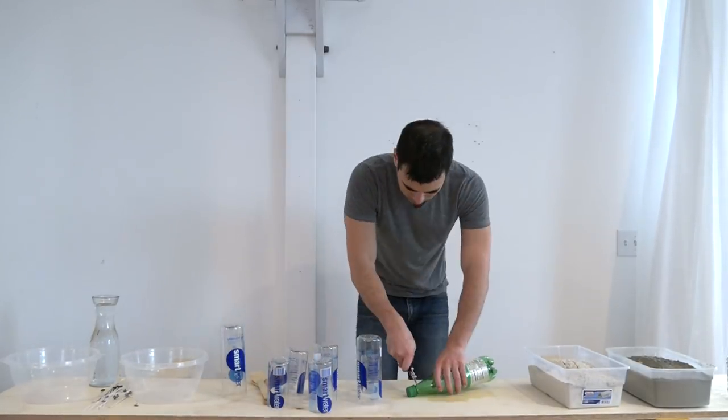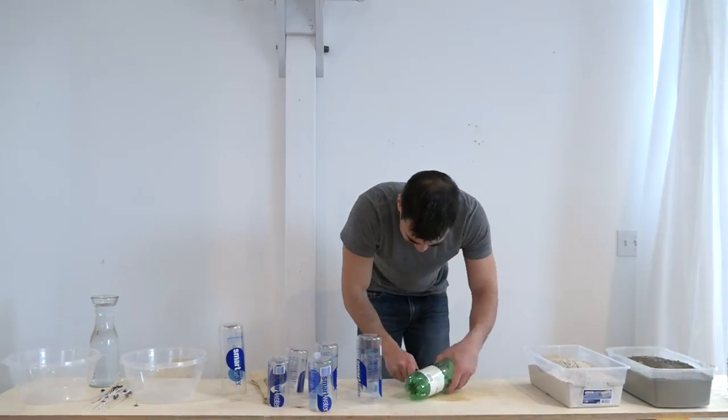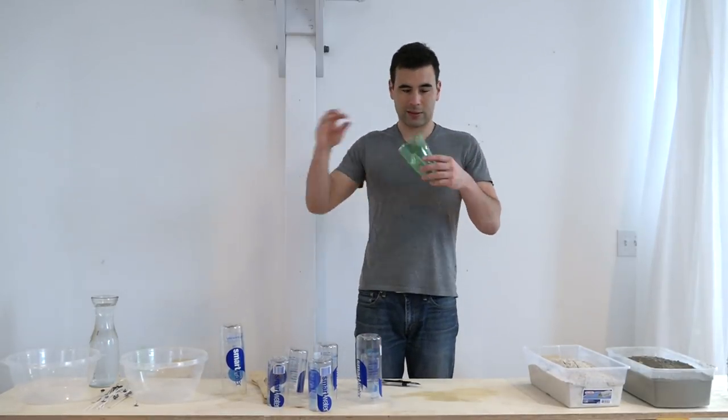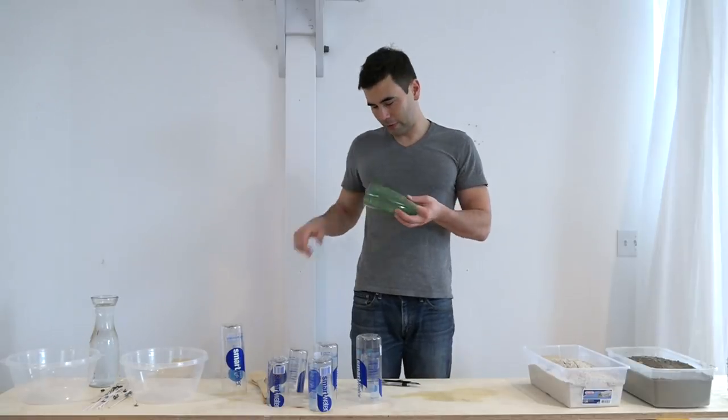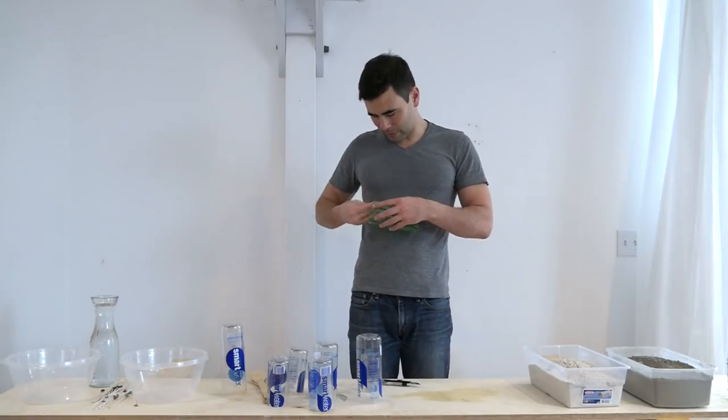Now one of the tricks for making these things is to get the concrete cleanly to the bottom of the water bottle. So I'm going to take a tapered plastic bottle and cut the top and bottom off of it to make my own little funnel.